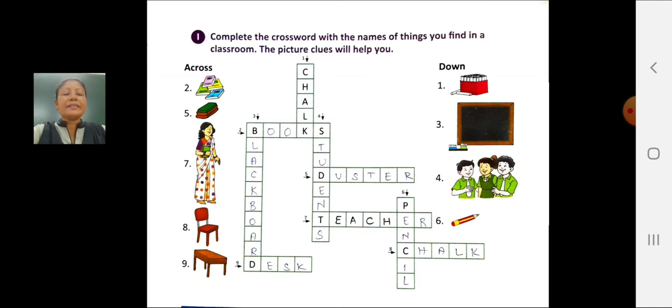Fifth picture is duster. Write the spelling of duster in the crossword fifth number, D-U-S-T-E-R, duster.